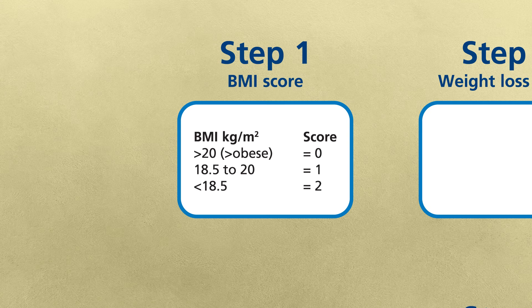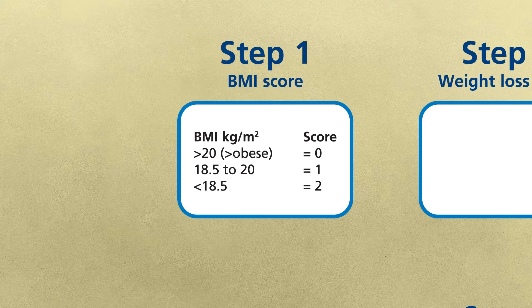Step one: BMI score. In the top left hand box under step one, it shows you that if your patient has a BMI of over 20 this would give them a zero for step one. If they have a BMI of 18.5 to 20 this would score one, and if their BMI is under 18.5 this would be a score of two for step one of the MUST tool.